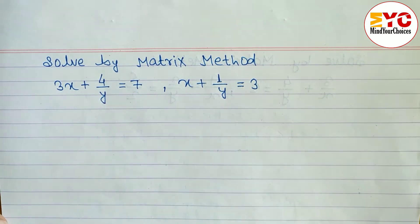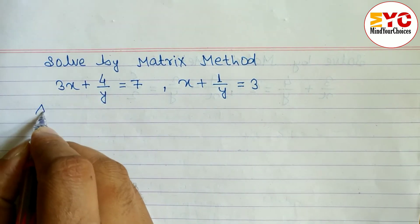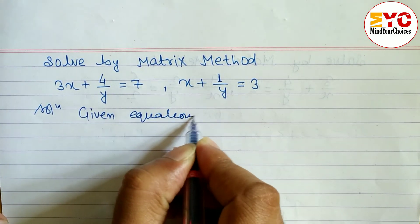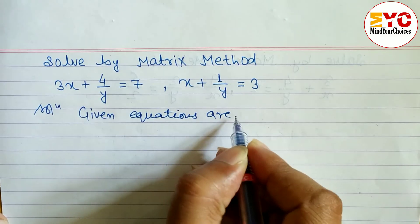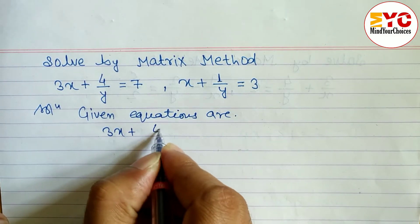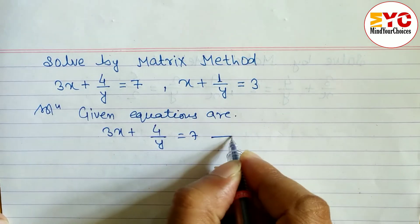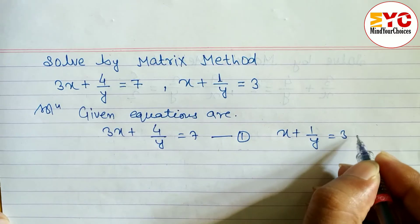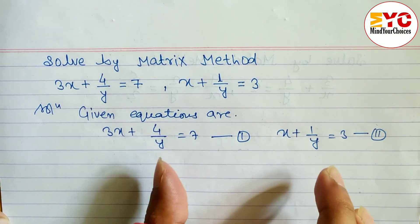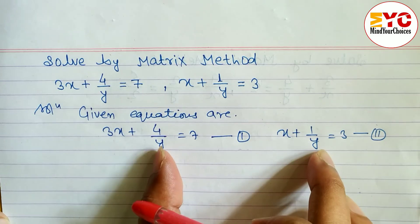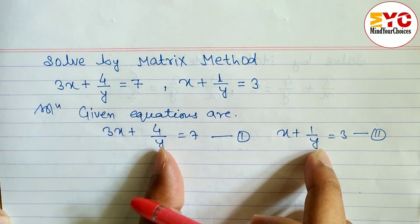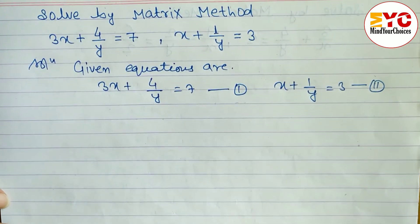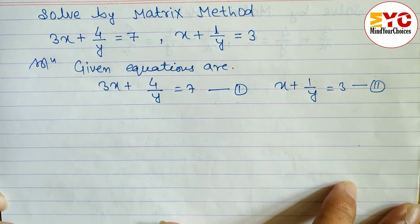Let's start the solution. The given equations are: equation 1 is 3x plus 4 by y is equal to 7, and equation 2 is x plus 1 by y is equal to 3. One thing to keep in mind — if there is a variable like x or y in the denominator, do not take LCM. If there is a number, you can take LCM. Here y is in the denominator, so do not take LCM.